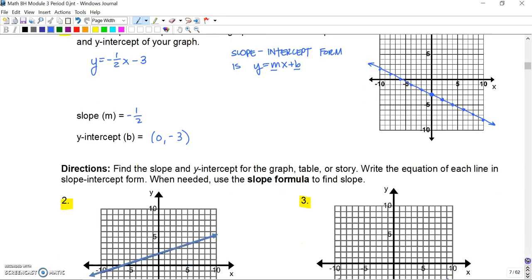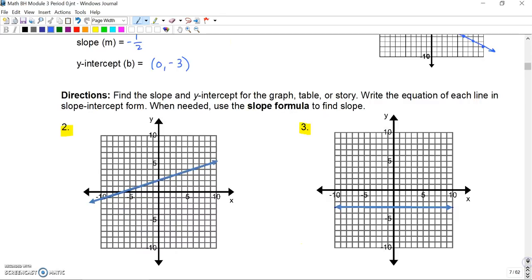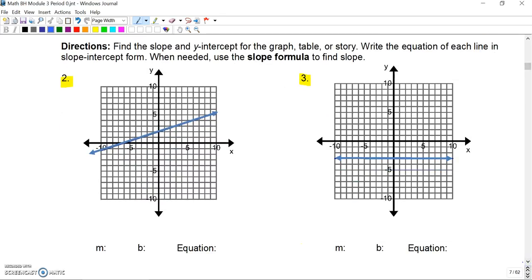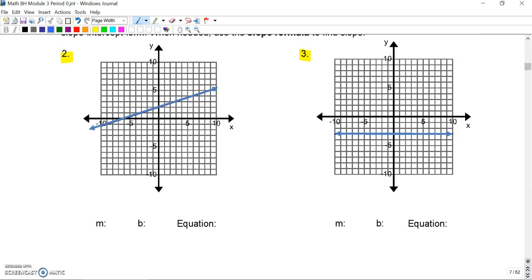Number two, on some of the problems below, they'll have some sort of table or graph or story, and we're going to write or fill out all the info for it. This one presents us with a graph, and we can see that the y-intercept is (0, 2). For the slope, it's hard to pick a point. That one looks close, but we're going to maybe say that one is maybe a good point.